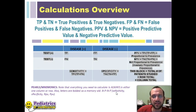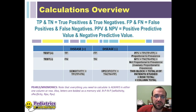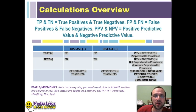The mnemonic for the table — all letters relevant to the calculations are bolded. Positive predictive value is proportional to prevalence. Negative predictive value is not proportional to prevalence. Sensitivity and specificity, we'll review later in terms of how those mnemonics work out.